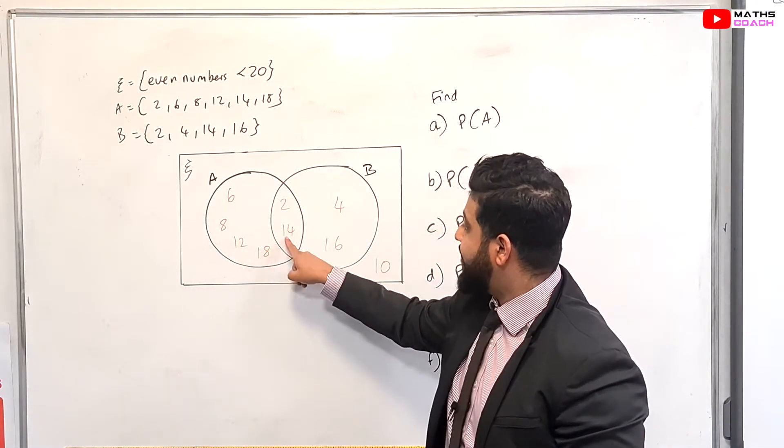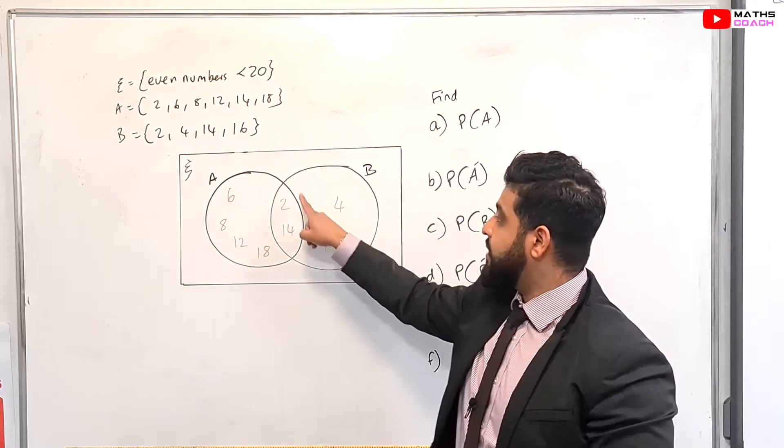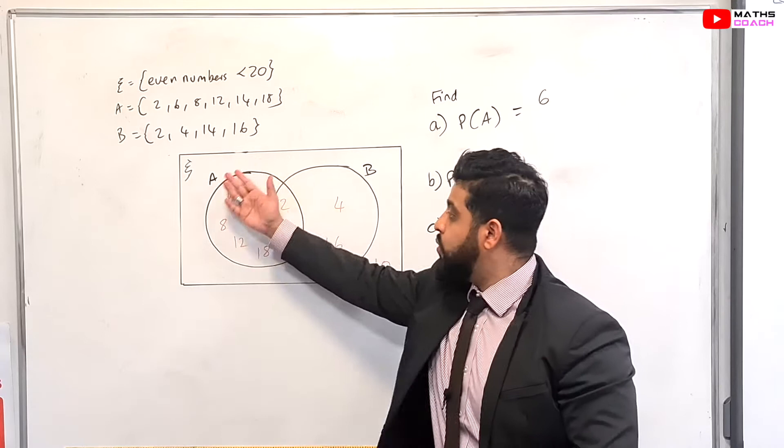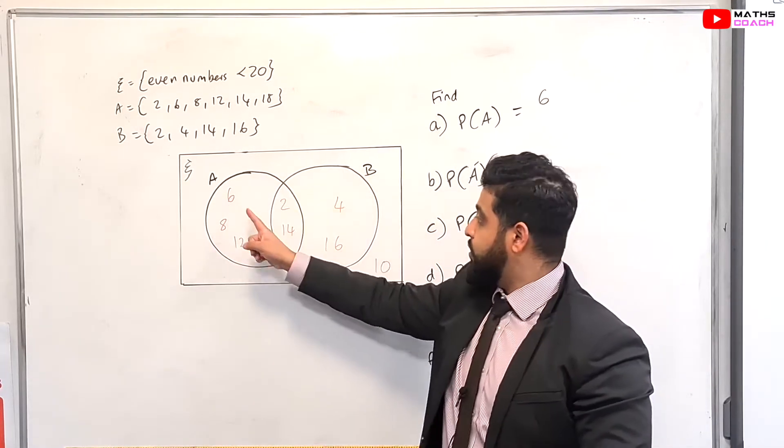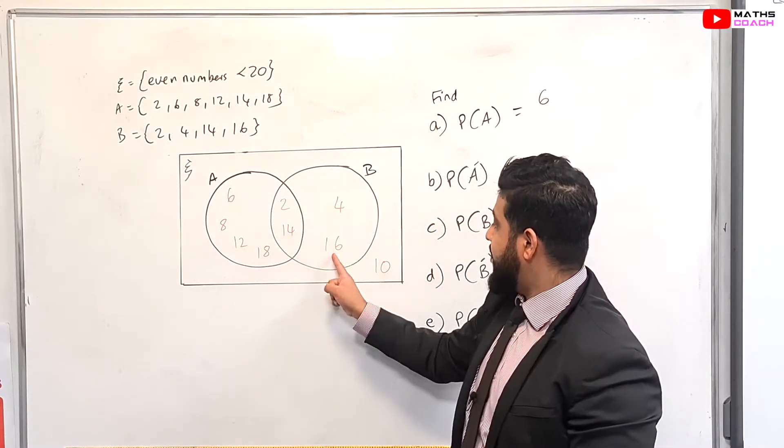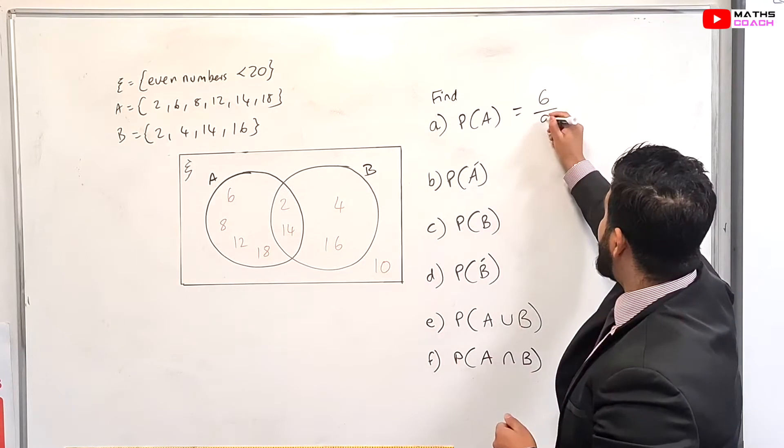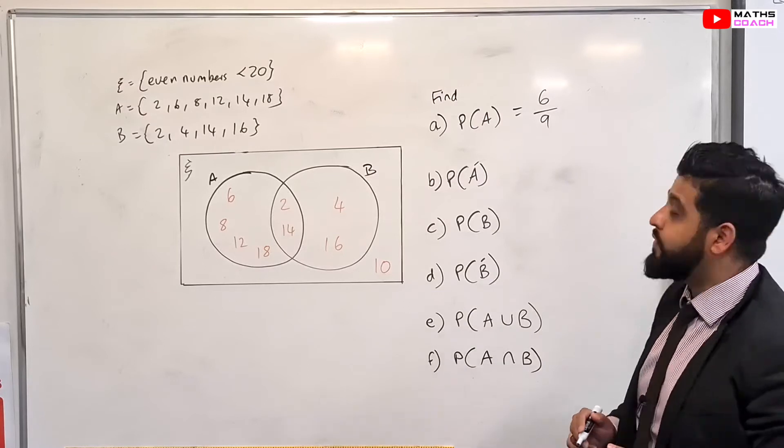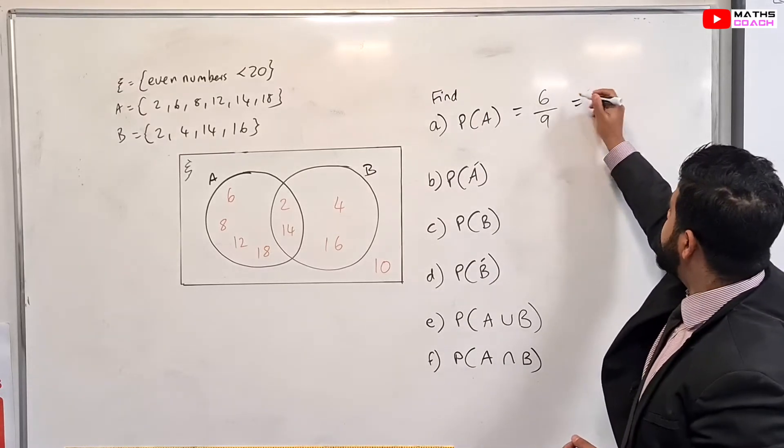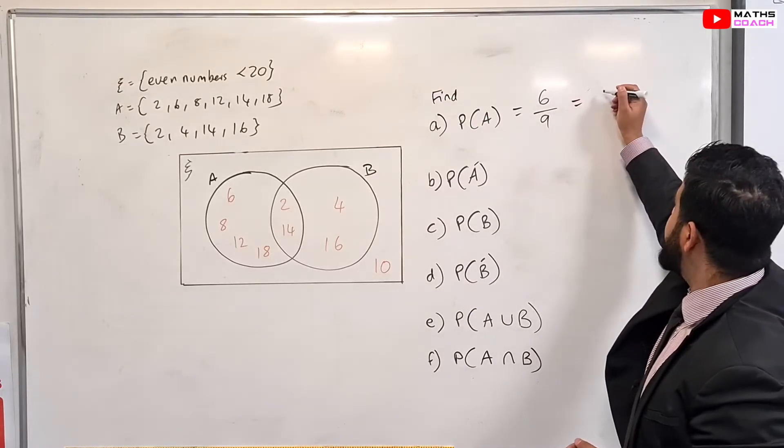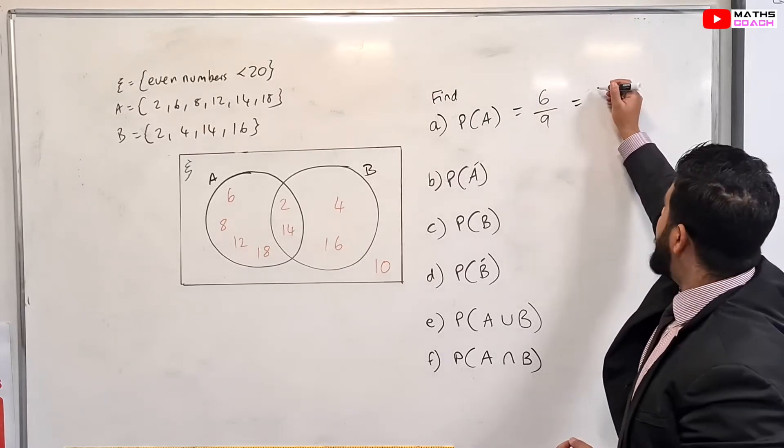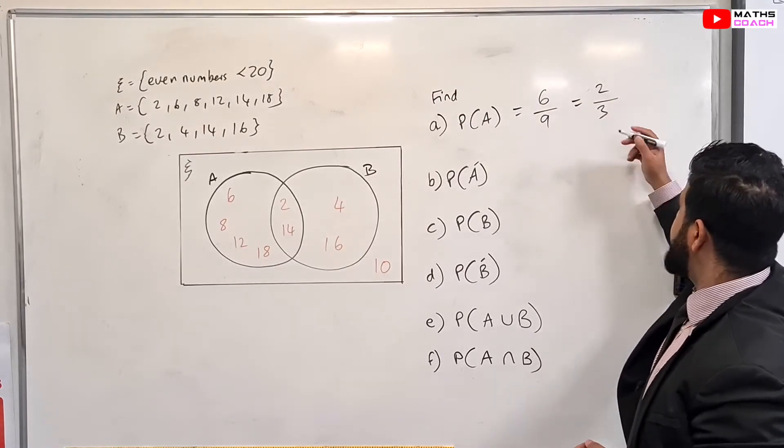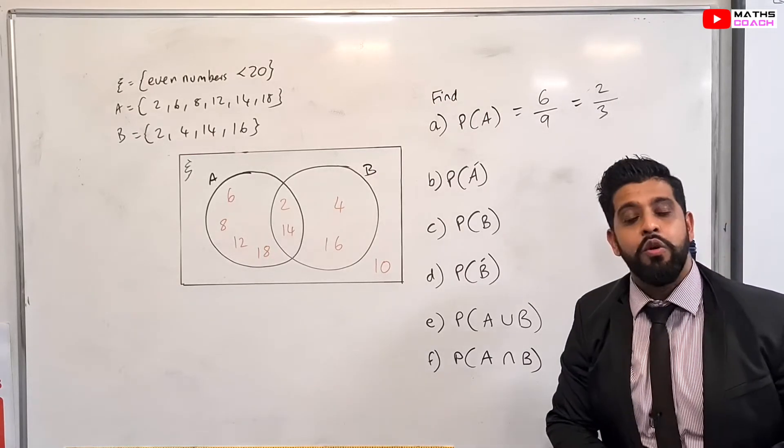So let's look inside that circle. We've got 1, 2, 3, 4, 5, 6 numbers inside the circle A. So we can say 6 out of the total amount in our data set, which is 6 in here, 7, 8, 9. So it's going to be 6 out of 9, the probability of selecting A. And you can divide this probability further if you want to. So 6 divided by 3, both of them go into 3. So 6 divided by 3 is 2 and 9 divided by 3 is 3. So you could leave your answer as 2 over 3 as well.